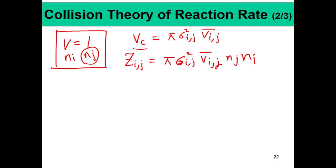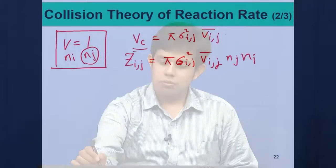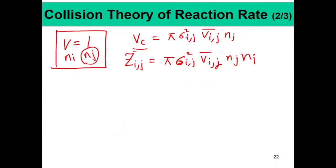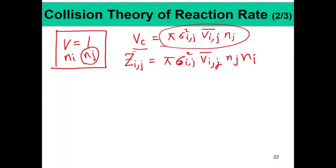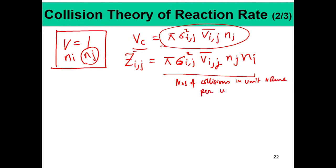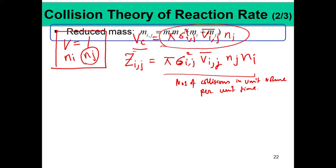We can also think of the collision volume V_c as sweeping through the unit volume. In V = 1 there are n_j molecules present, so inside V_c there are π σ_ij² v̄_ij × n_j molecules of j. For each molecule of i there are this many collisions, and with n_i molecules of i, the total number of collisions between i and j is Z_ij = π σ_ij² v̄_ij n_i n_j — the number of collisions in unit volume per unit time.